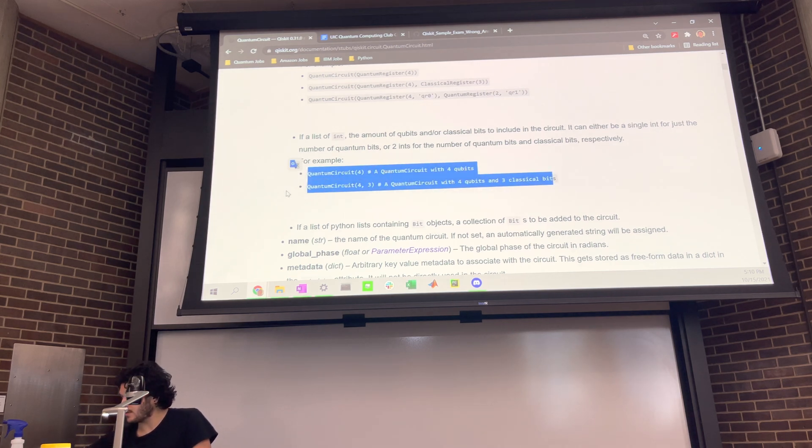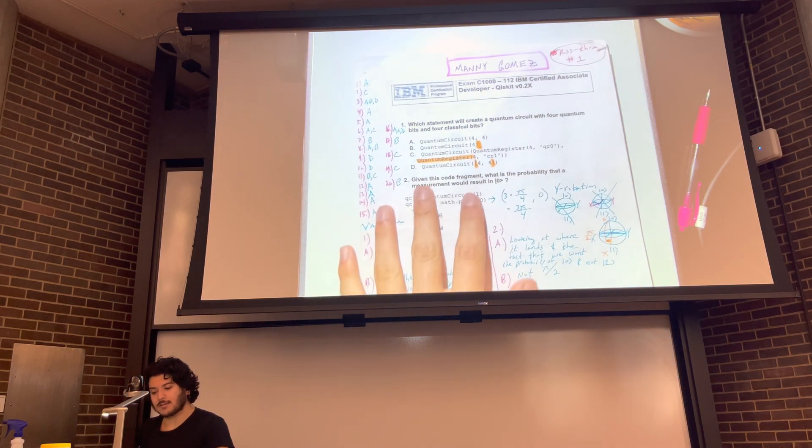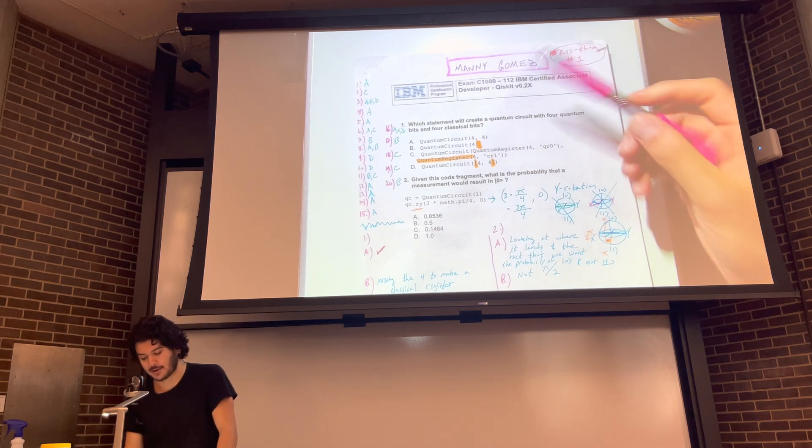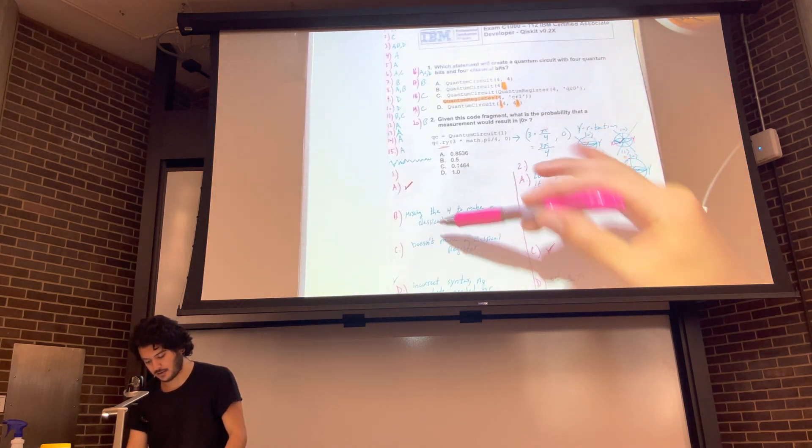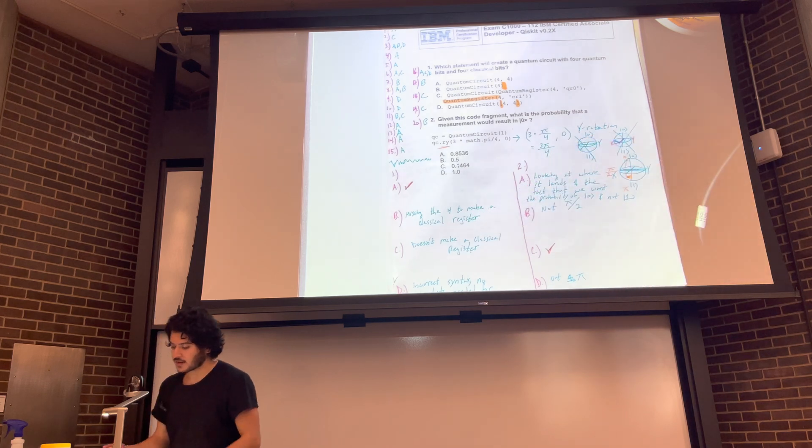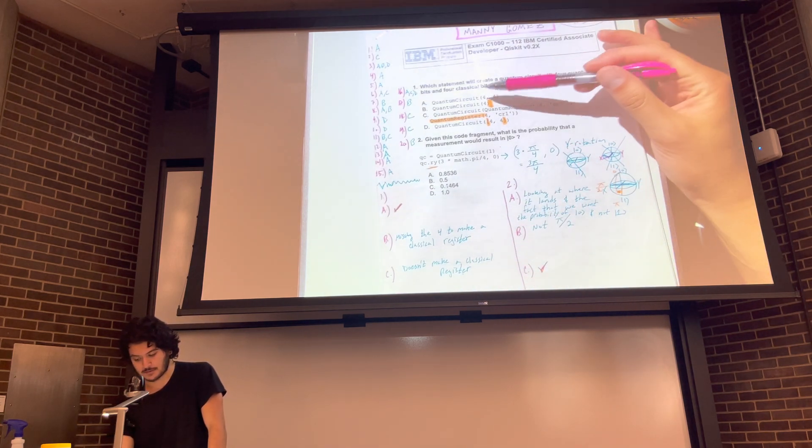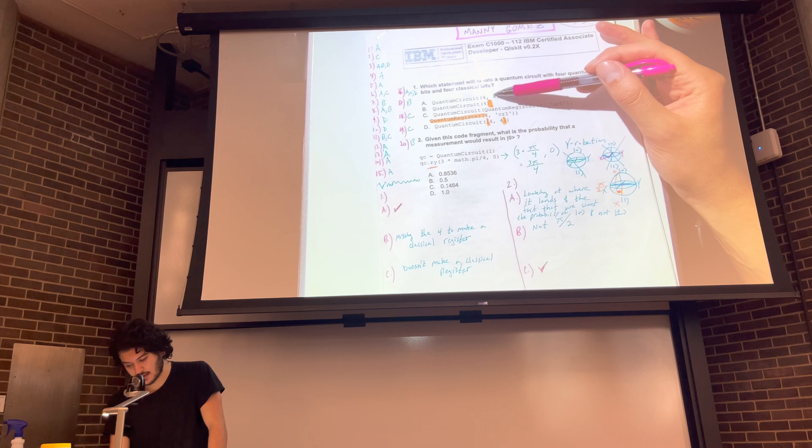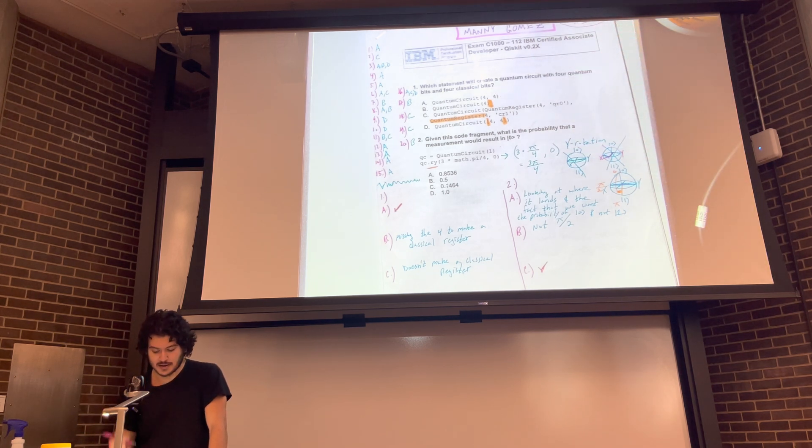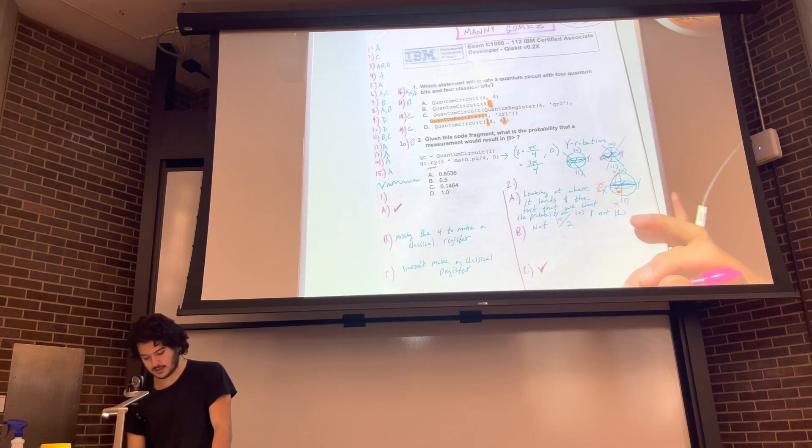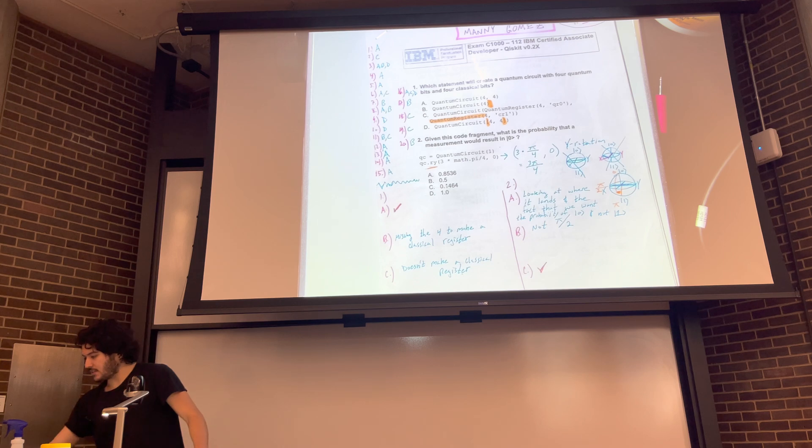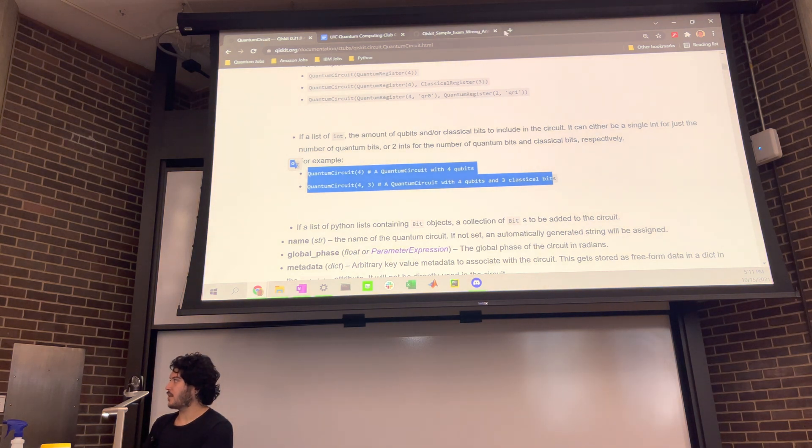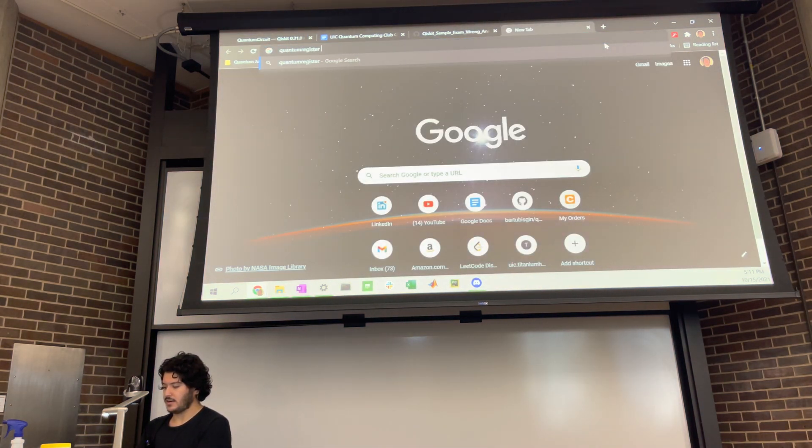It says, for example, quantum circuit four creates a quantum circuit with four qubits and three classical bits. So if we go back to the question, we'll notice that it's asking for a quantum circuit with four quantum bits and four classical bits. So we need both of those numbers. They're separated by a comma. So immediately we can rule out option B, which is missing the four to make a classical register. So from that, we can also tell that this first number represents how many qubits you want, and the second number represents how many classical qubits you want. So immediately we know B is wrong and D is wrong for those reasons.